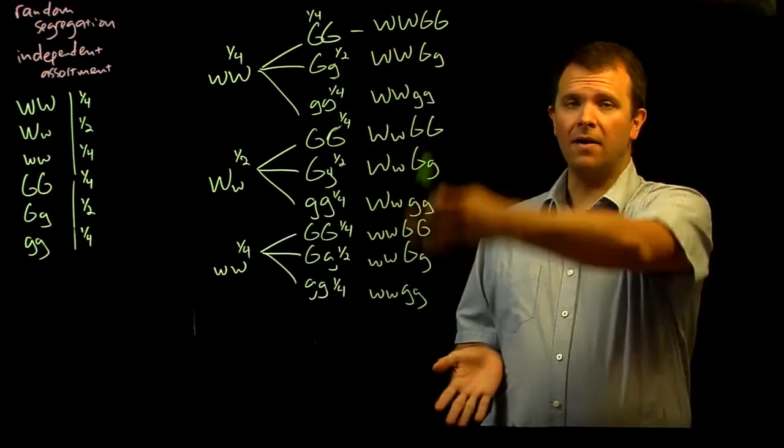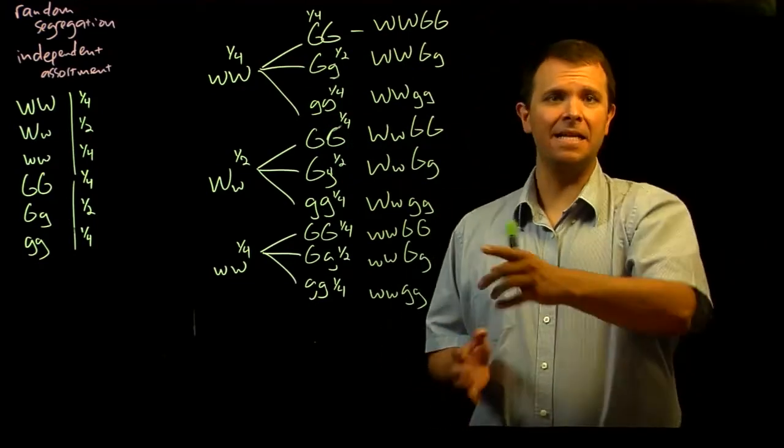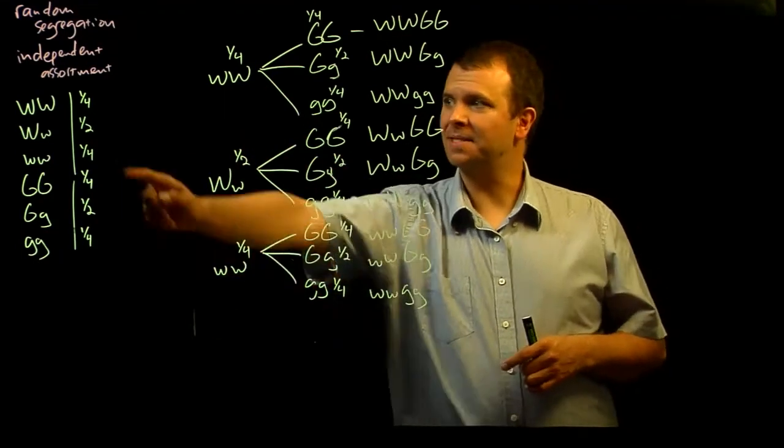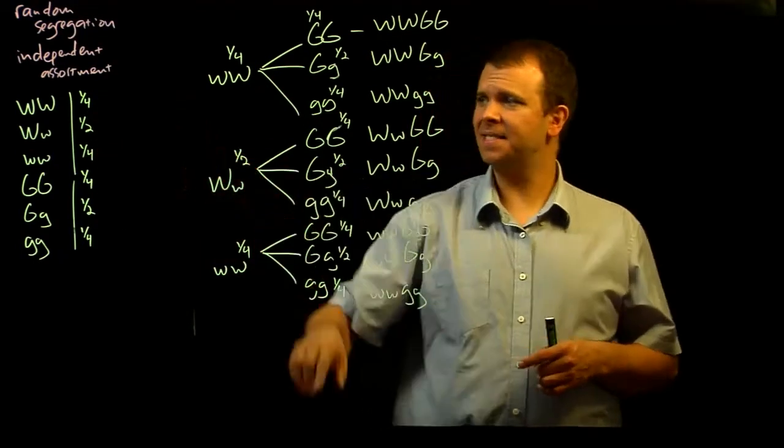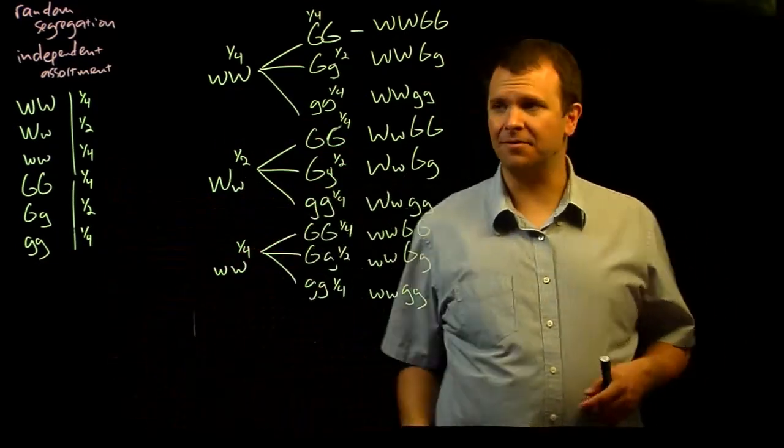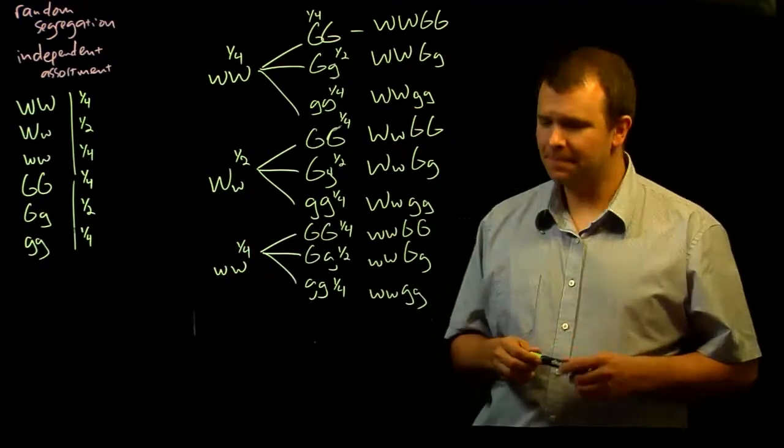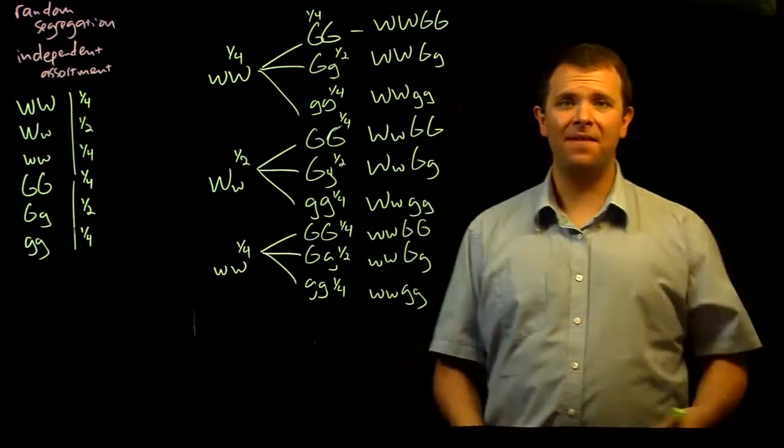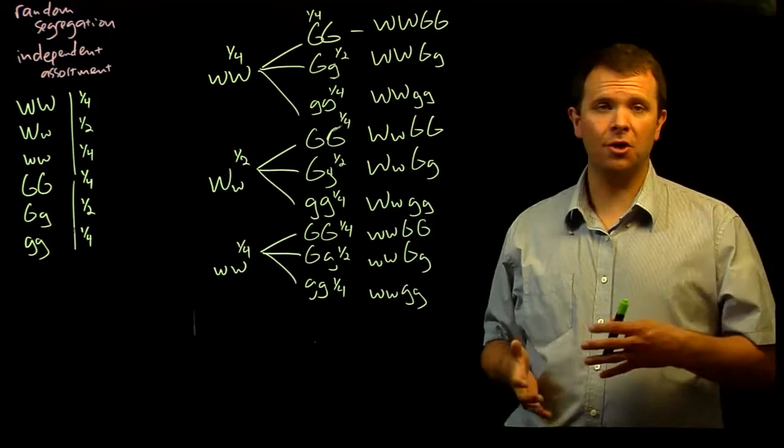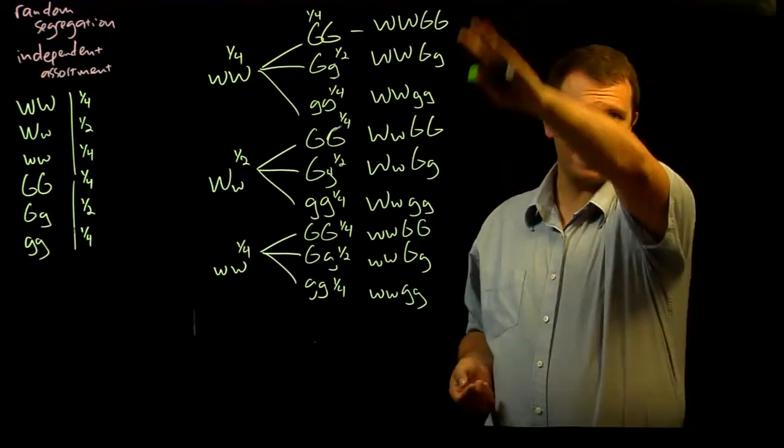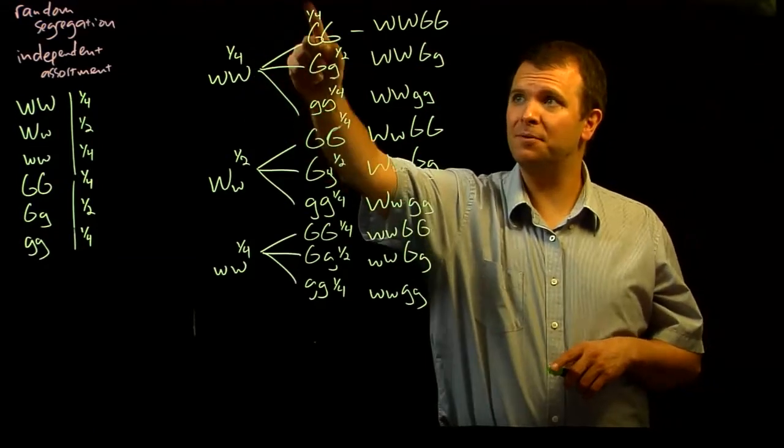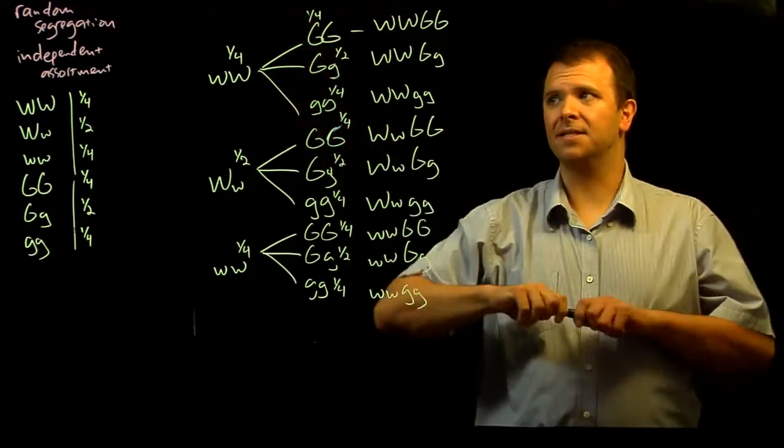Thus, our elementary outcomes we can simply enumerate by asking, what are the elementary outcomes of this set of events? And for each of those, what are the additional elementary outcomes for this event? And because these events are independent, we can determine the probability of each of these elementary outcomes just by multiplying together these probabilities.